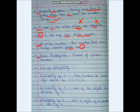Prime factorization — we can use the factor tree method to solve this. Prime factorization means expressing a number as the product of prime numbers. We only multiply prime numbers in this method.